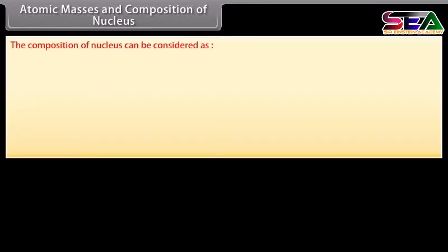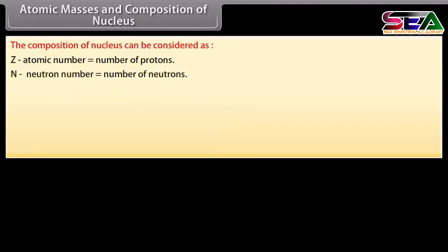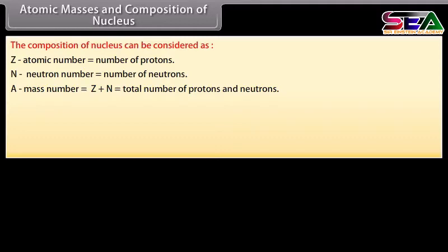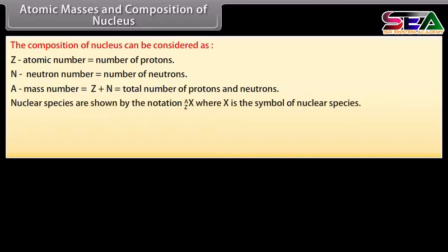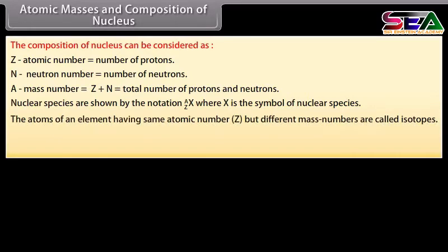The composition of the nucleus is described as follows: Z is the atomic number, equal to the number of protons; N is the neutron number, equal to the number of neutrons; A is the mass number, equal to Z + N, the total number of protons and neutrons. Nuclear species are shown by notation where X is the symbol. Atoms of an element having the same atomic number Z but different mass numbers are called isotopes.